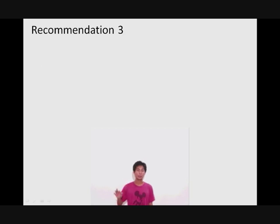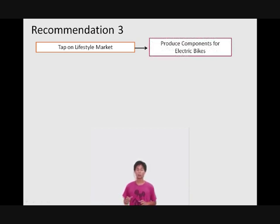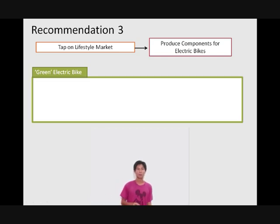Now, the third recommendation that we propose is to tackle the growth issue that we are facing given the stagnant road and mountain bike markets. Now, Shimano needs to tap on the lifestyle segment in order to continue its growth. Now, we propose that Shimano produces components for e-bikes as we see it to be an upcoming trend. Now, an example of what we have in mind is to produce components for green e-bikes.